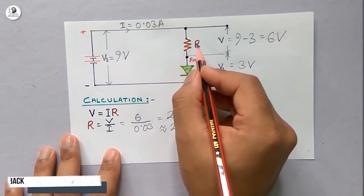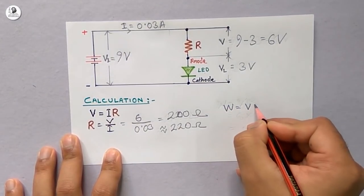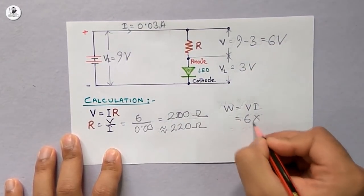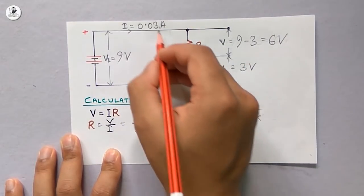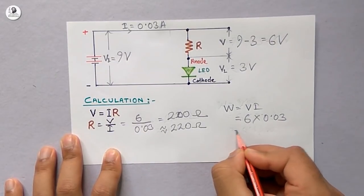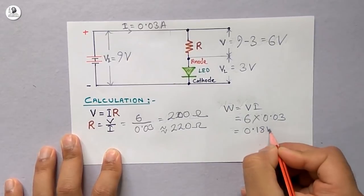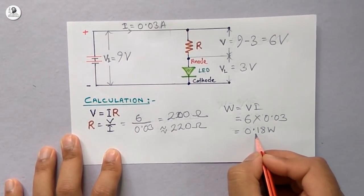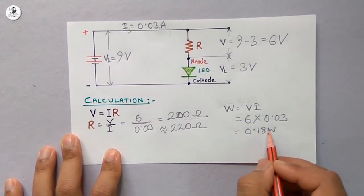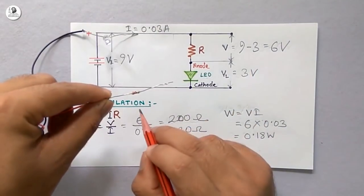Now, to find the wattage of the resistor we should use, we can consider a simple formula which is W equal to V times I. Here V is 6 volt, which is the voltage drop across the resistance, and I is the current through the resistance, which is 30 milliampere, or 0.03 ampere. If we multiply these two values, we will get the wattage rating the resistance should meet. So here we are getting 0.18 watt. The wattage value of the resistor we should use should be greater than 0.18 watt. So here I will use a 0.25 watt resistor to make this circuit.